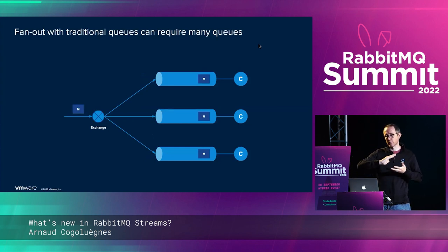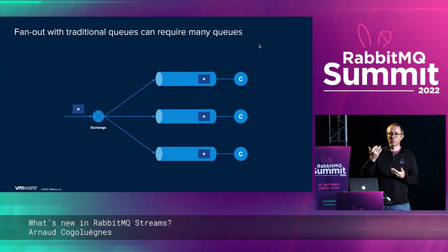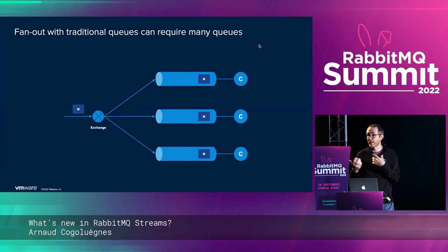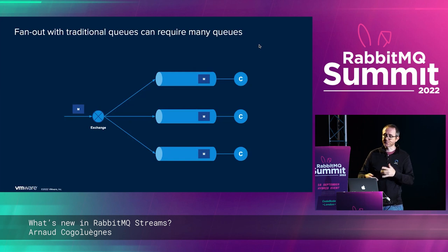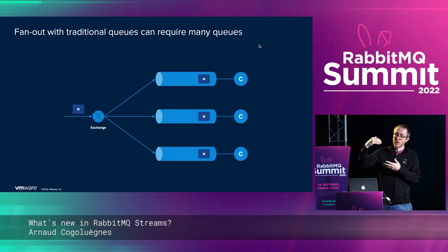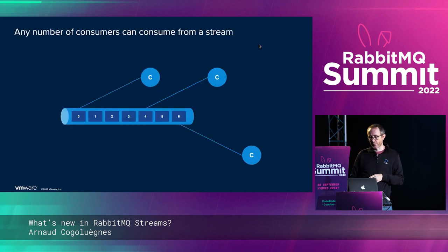For the fan-out pattern with a queue in RabbitMQ, if you have invoices or orders coming from your online store, the messages go to the exchange. Maybe you want different processing — one for the accounting application, another for the inventory application. You need several queues bound to the exchange and connect your consuming application to its own queue. It works, but if we have many different processings we need a lot of queues bound to exchanges — it doesn't really scale.